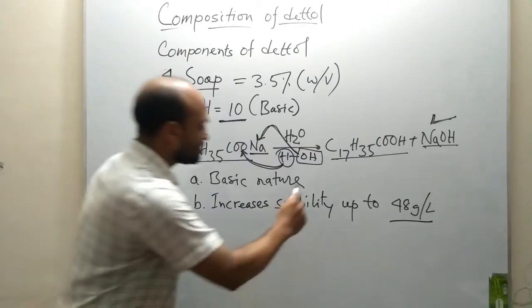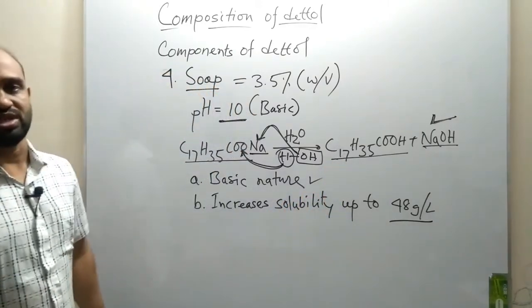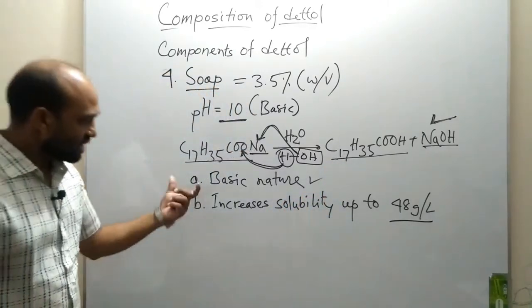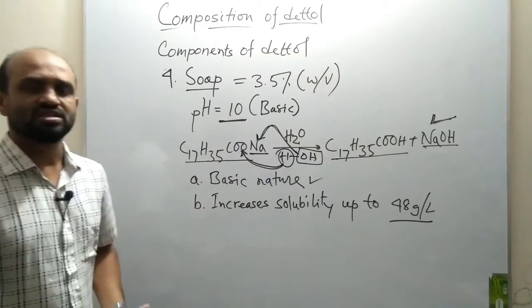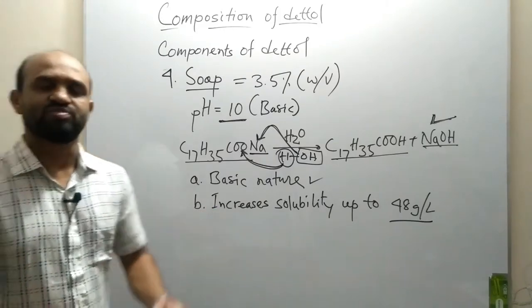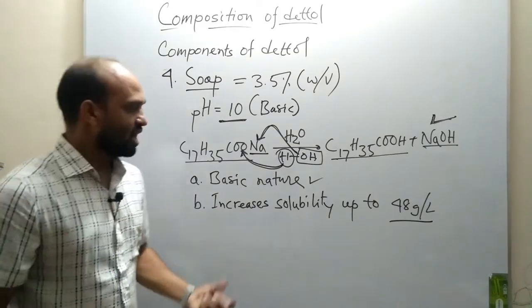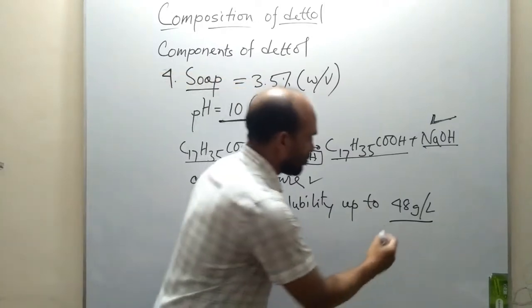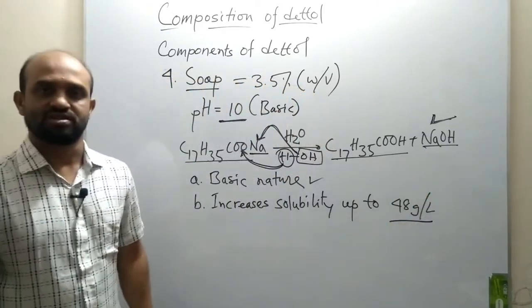The basic nature of Dettol is also unsuitable for germs. Additionally, soap increases the solubility of the main compound of Dettol up to 48 grams per liter.